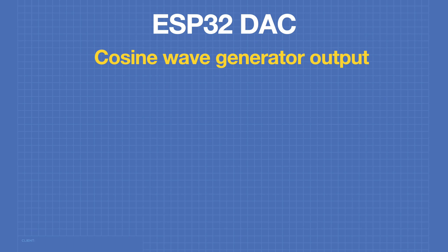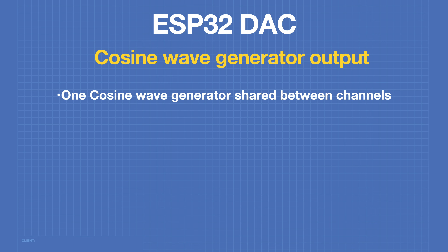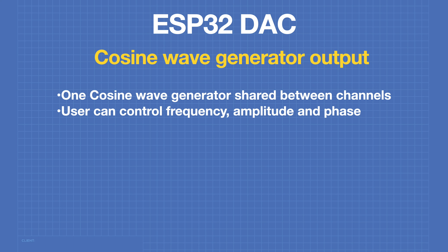The ESP32 DAC has an internal cosine wave generator. There is only one of them, and its output can be used by either channel. The user can control the frequency, amplitude, and phase of the wave. The clock source for the cosine wave generator is the ESP32's real-time clock.